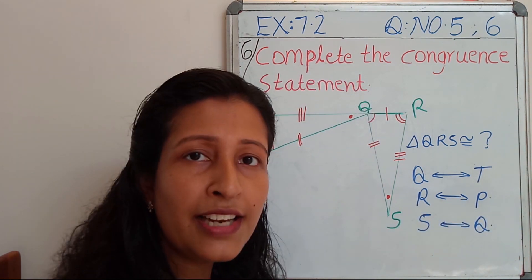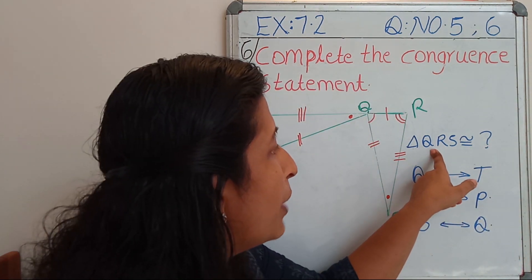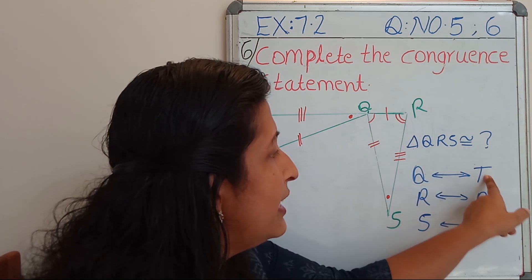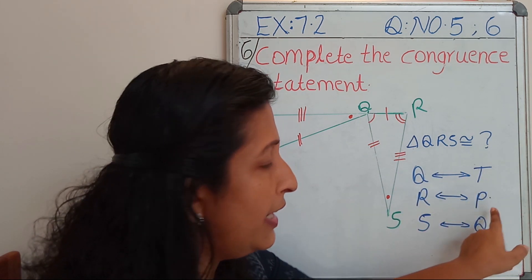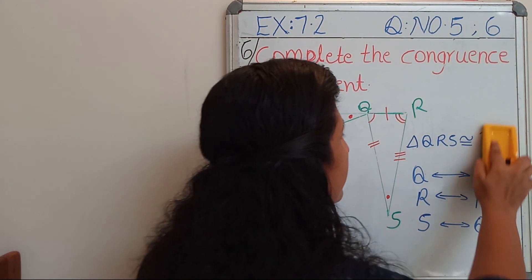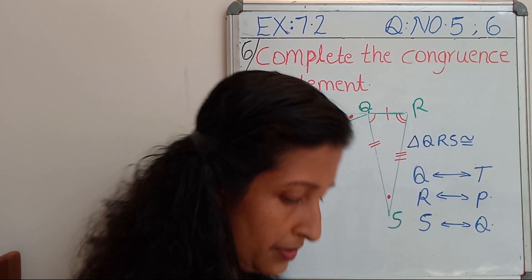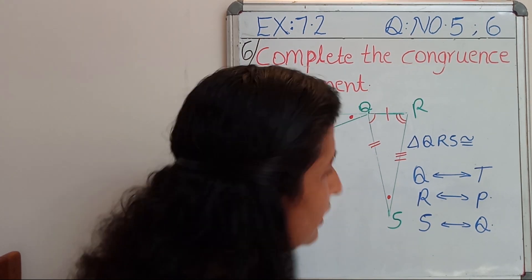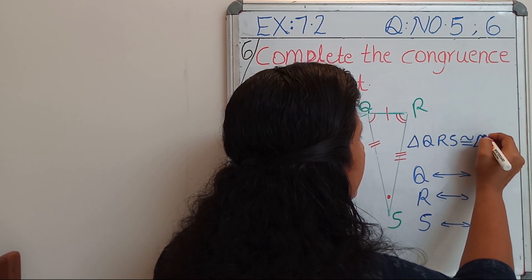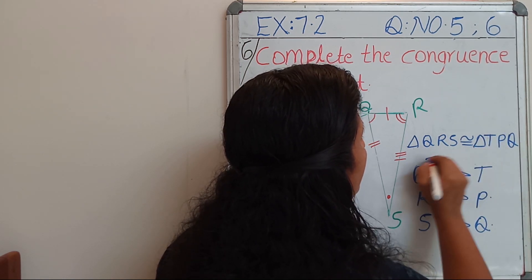So we got the answer. Triangle QRS is corresponding to TPQ, so the answer is: triangle QRS is congruent to triangle TPQ.